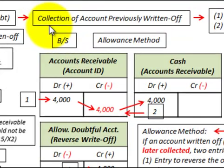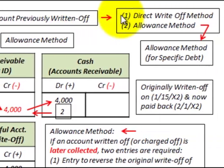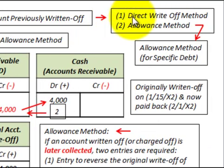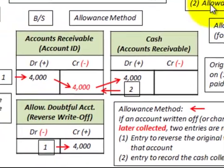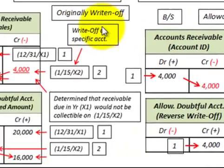Here we're going to be looking at bad debt or uncollectible debt, and we're going to be looking at a collection of an account that was previously written off. We'll look at both the direct write-off method and the allowance method, covering how we'd recover the debt under each approach. Let's start with the allowance method, but first let's look at how it was originally written off.